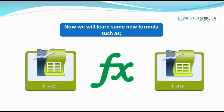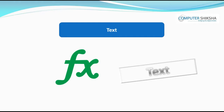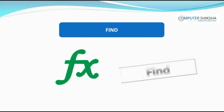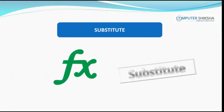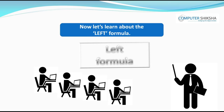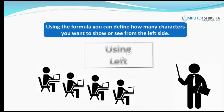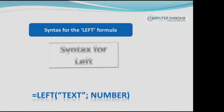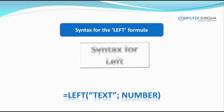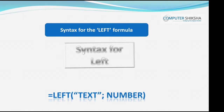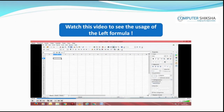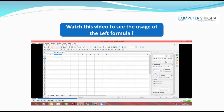Now let us learn about some new formulas: text, left, right, mid, find, search, substitute, length, and trim. With the left formula, you can define how many characters you want to show from the left side. The syntax is: equal to LEFT, open bracket, put the text in inverted commas, semicolon, put the number, close bracket. Watch the video to see how this left formula is used.